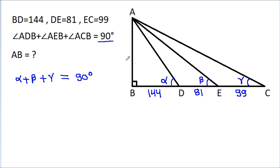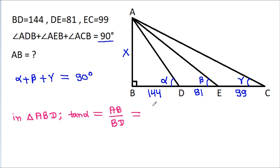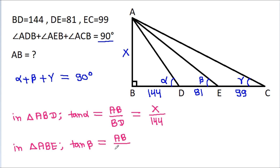Suppose AB is X. Then in triangle ABD, tan alpha equals AB by BD, which is X by 144. And in triangle ABE, tan beta equals AB by BE, where BE is 144 plus 81, so tan beta equals X by 225.